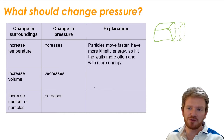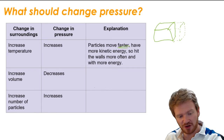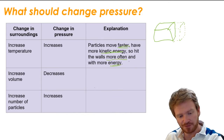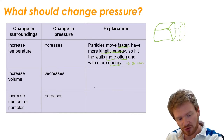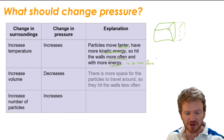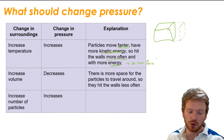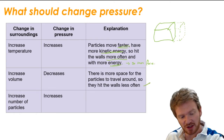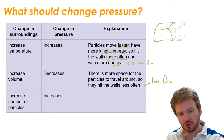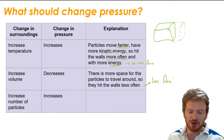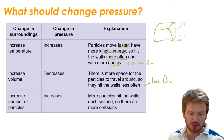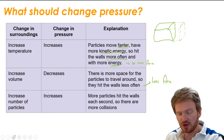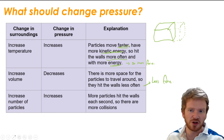Why is that? Well for temperature, it's the idea that particles are moving faster. If they move faster, they've got more kinetic energy and they hit the walls more often and with more energy — so more force. If I increase the volume, there's more space for the particles to travel around, so they hit the walls less often, meaning less force on those walls, so pressure goes down. And for increasing the number of particles, more particles hit the wall each second — more collisions, more force, more pressure.